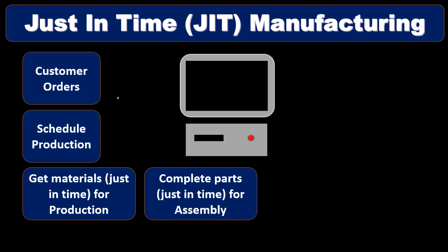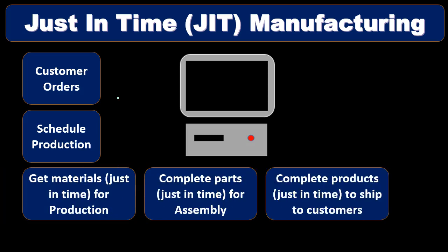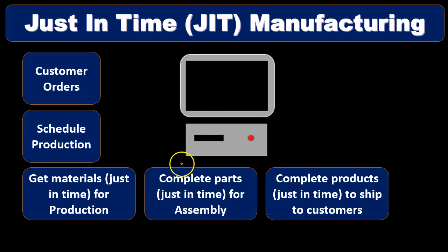Then we want to complete the parts just in time for assembly, and complete products just in time to ship. Notice all these things are basically happening very quickly after the customer has made an order. All these links along the way need good communication with our suppliers. We need to be able to assemble everything in a systematic process fairly quickly. If that's the case, we have the benefit of a more customer-centered design with more flexibility on the types of products we put together, which is generally what customers are looking for these days.